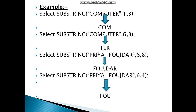In the next example, the string is again 'computer', the start position is six, and the number of characters to fetch is three. Finding position six: one, two, three, four, five, six — the letter 't' is at position six. Starting from 't' and taking three characters gives us 't-e-r' as the output.